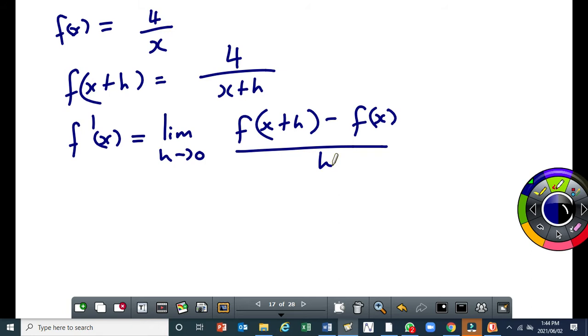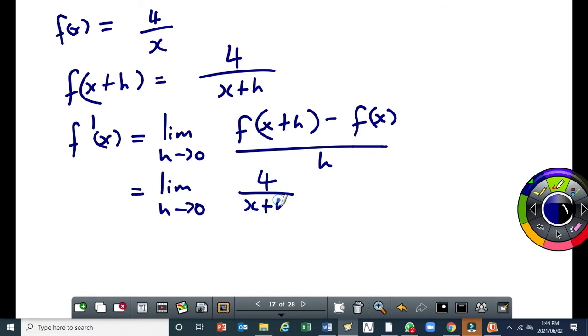Then, from there, we substitute our expression for f(x+h). So this will become limit as h tends to 0 of 4/(x+h) minus f(x). Now, f(x) is equal to 4/x. So where there is f(x) there, we replace it by 4/x. And then we get 4/x. This is all over h.